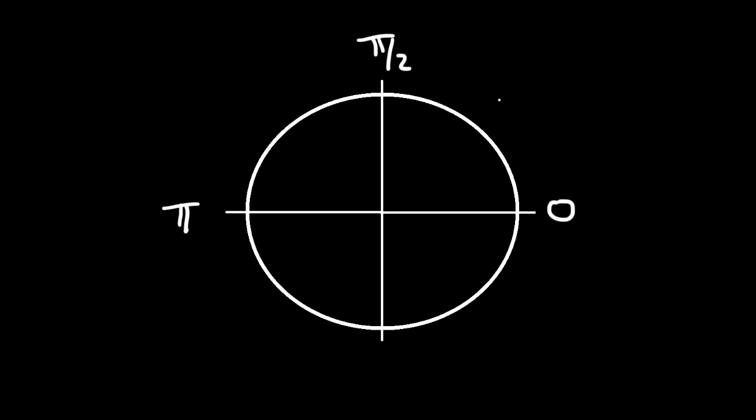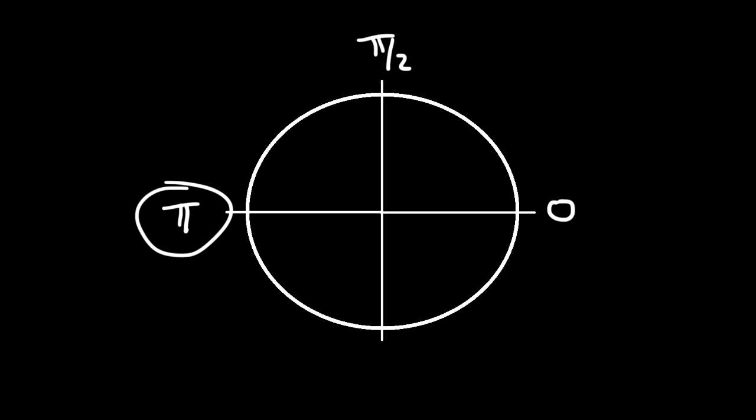In this video, we're going to talk about how to memorize the unit circle. The first thing we need to be familiar with are the angles of the unit circle in radians. Here we have 0 degrees, and a full circle is 2π. Half a circle is π, and half of π is π/2. You can think of this as 1π/2, π as 2π/2, then 3π/2, and 4π/2 is the same as 2π, which takes us back to 0.